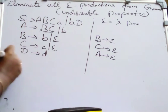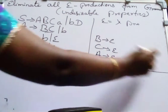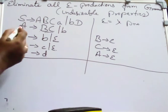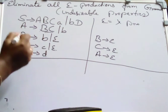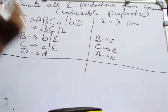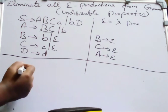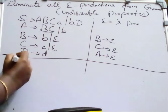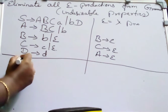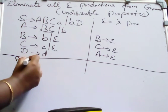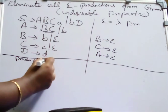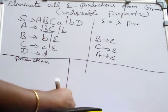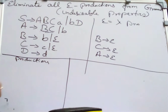So the first step is to identify the nullable variables. From this we identified B, C, and A as the nullable variables. The next step is: take each production, make two columns, and try to remove the epsilon production.